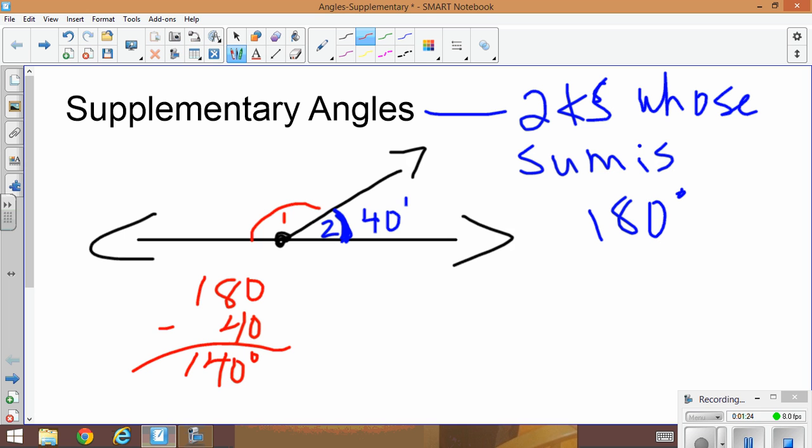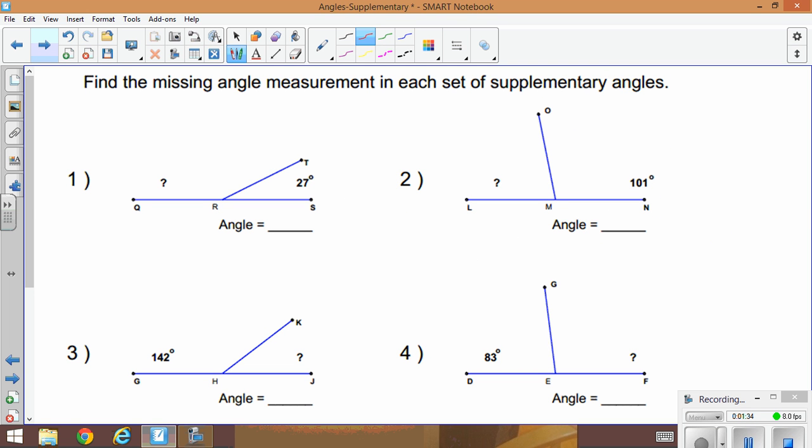Okay, now on the next page I have a few examples, so please write the definition down and pause if you need to. We'll go to the next page. Okay, we have four examples here. The direction states find the missing angle in each of the supplementary angles. Okay, when you see that, that means we have the angles that add to 180 degrees.